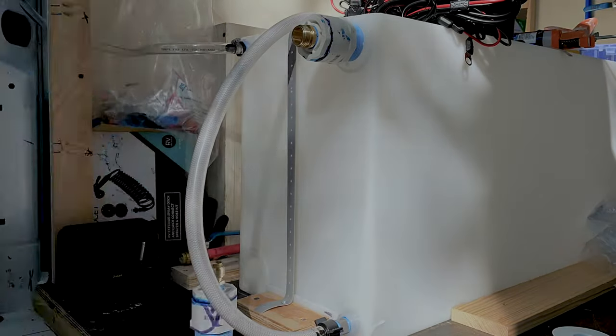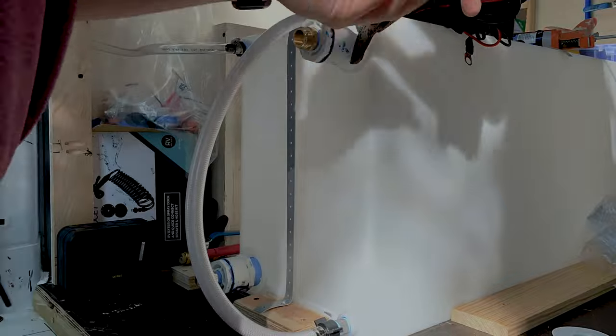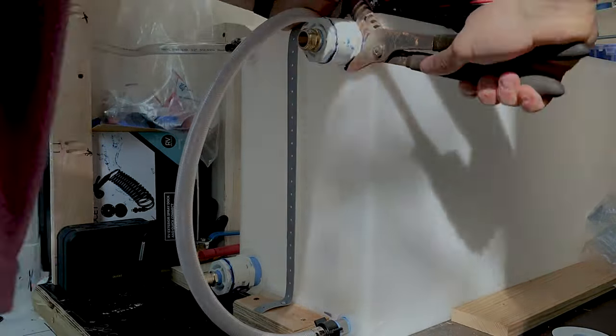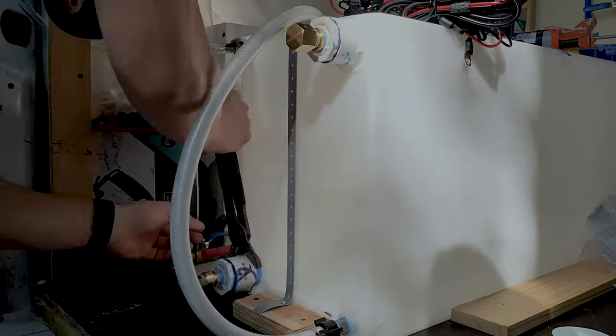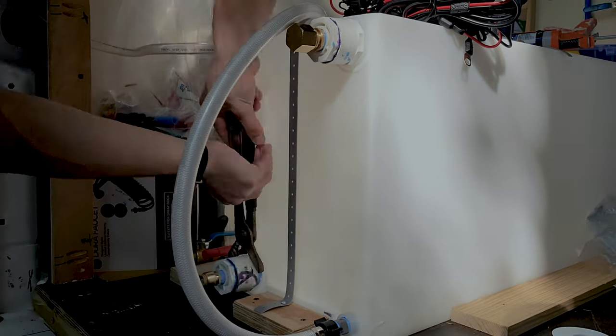The top right fitting that we are tightening to our tank will be for our fill port and the bottom left is for winterizing the van. This is in the event that we were to ever fill our tank with bad water and needed to dump it or if we were ever in too cold of climates where our tank or our pipes could potentially freeze.